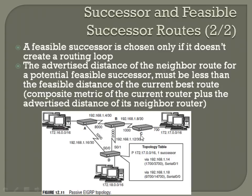Make sure you know the difference between a successor and a feasible successor, and what the difference is between advertised distance and feasible distance. Successor is the primary route it chooses. Feasible successor is a backup route. Feasible distance is the actual distance to get to a network. Advertised distance is the distance that the next hop advertises back to your router, telling you how far it is from there.